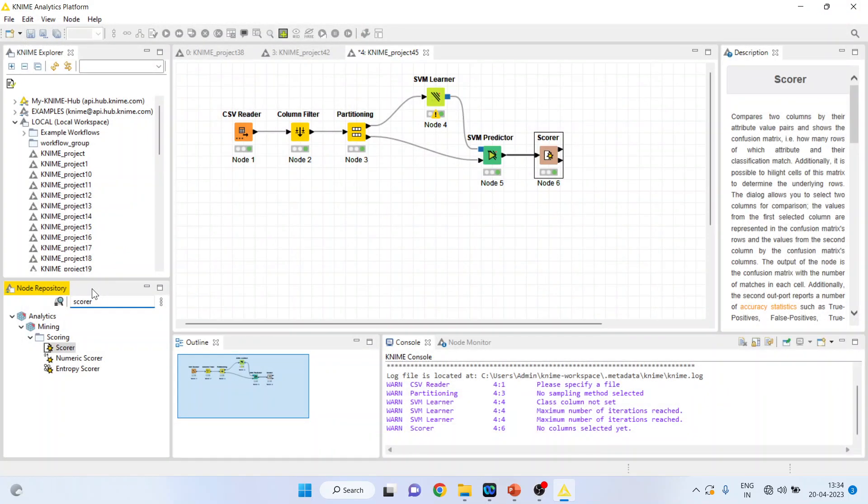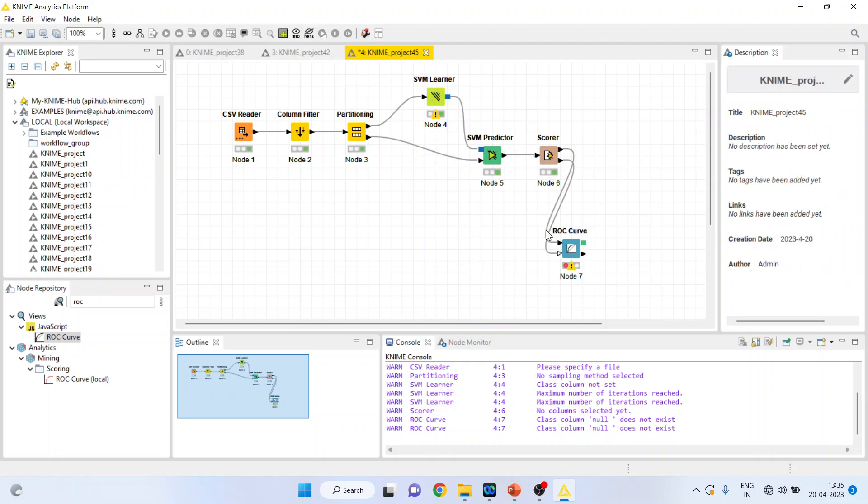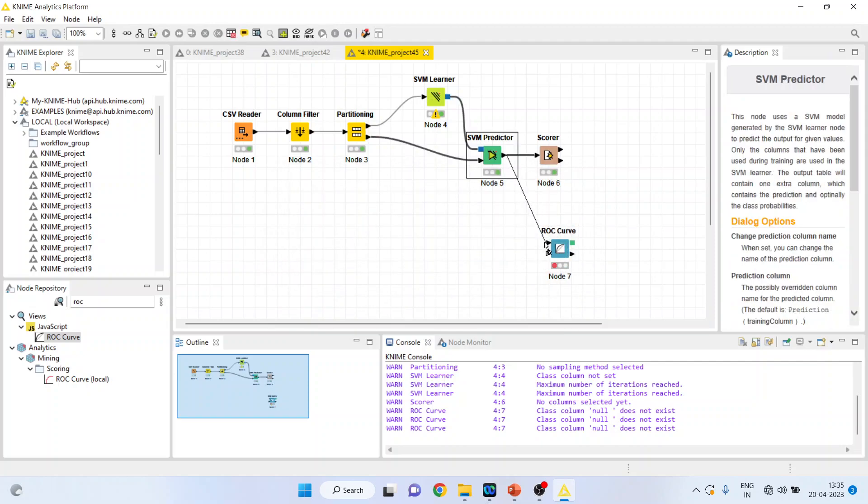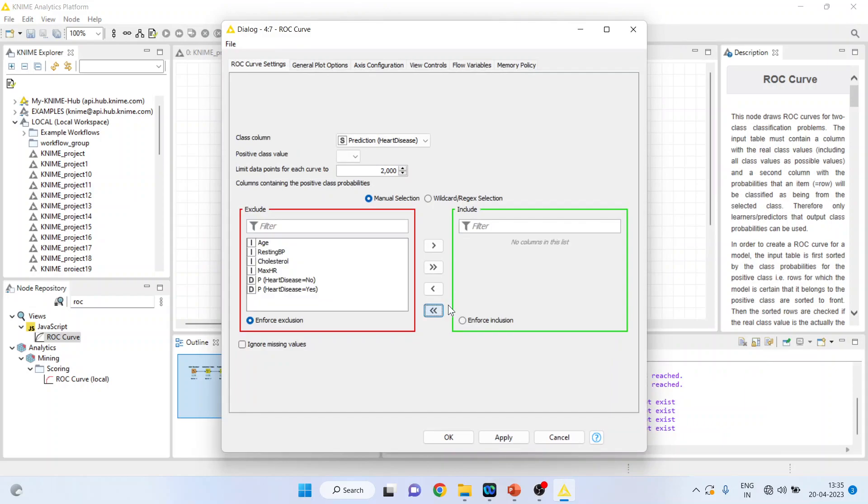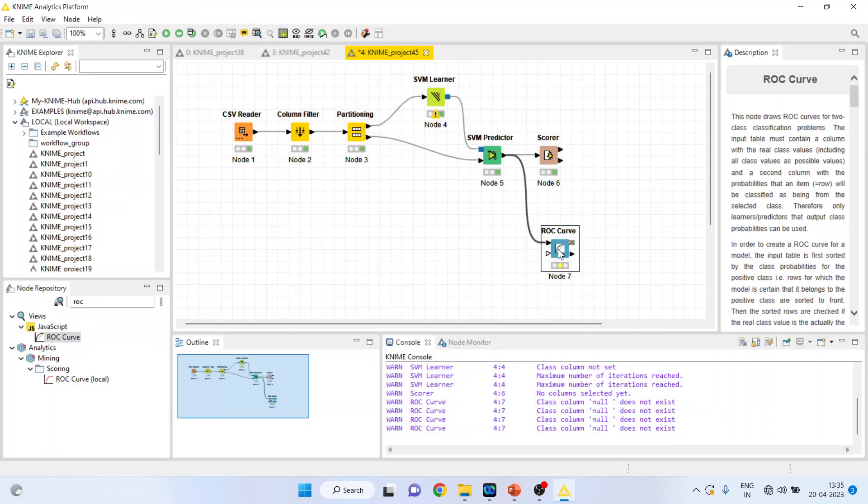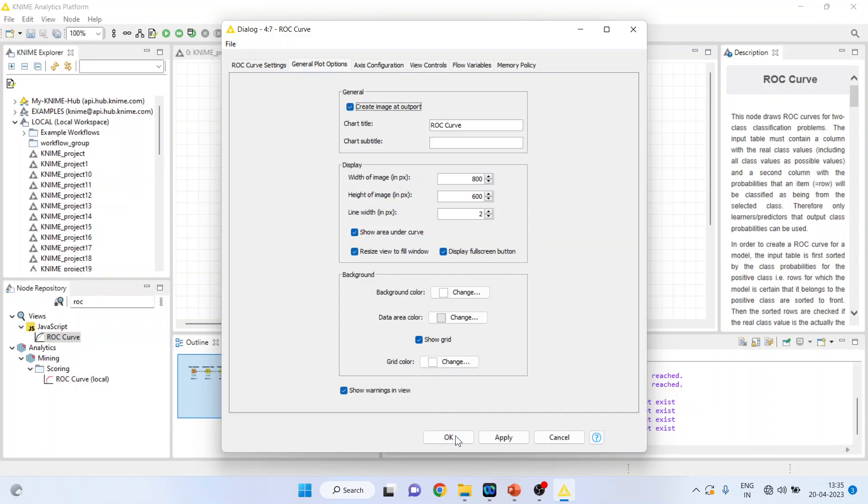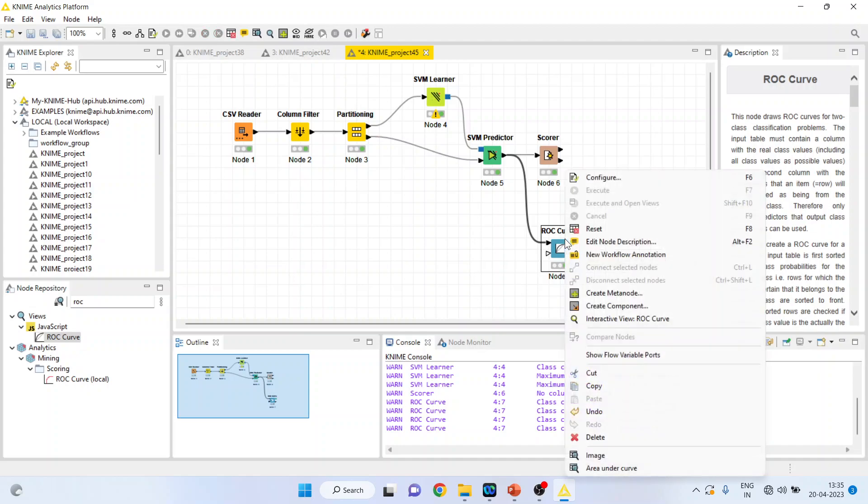Now let's plot the ROC curve for this. Connect SVM predictor with ROC curve, right-click on it and configure. Now remove or rather take all the variables this side, activate the heart disease yes and compare this with the predictor. Click OK. We are getting cross here, no need to worry. Again, click on configure, go in general plot options, create image at port. Right-click on it and execute.